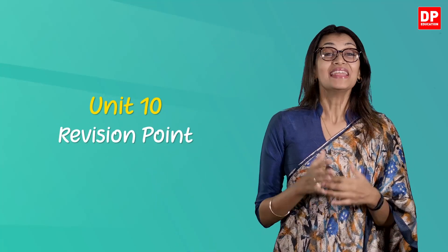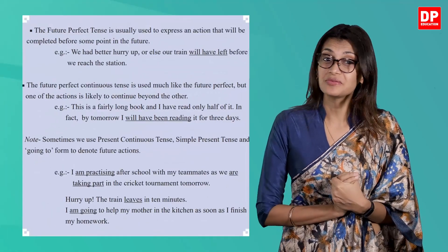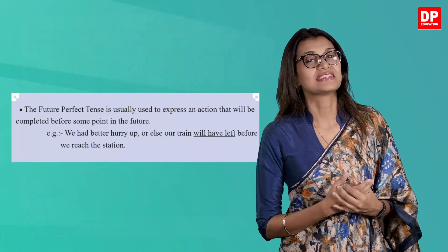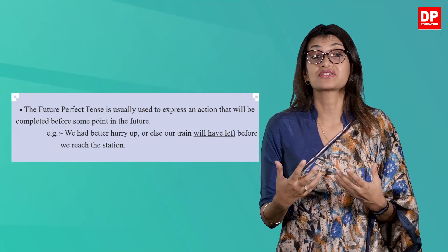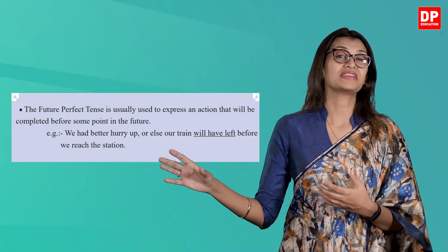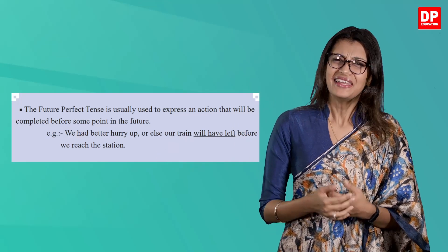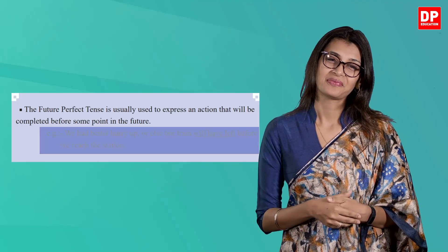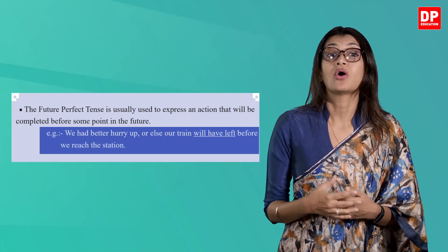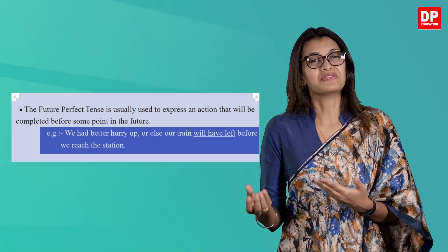Let's look at your pupils book, provision point of unit 10, page 119. Let's read their definition of the future perfect tense. The future perfect tense is usually used to express an action that will be completed before some point in the future. The future perfect tense is for talking about an action that will be completed between now and at some point in the future.